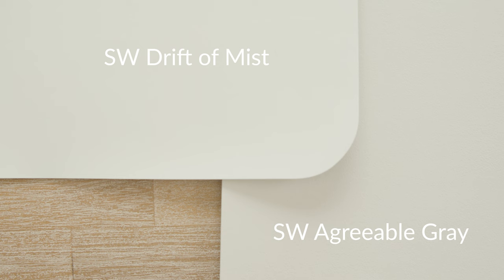There's another color I want to show you. Watch what happens when I compare this with Sherwin-Williams Agreeable Gray, which is considered a warm gray. For those of you that haven't been following me for a while, all warm grays have a green-gray undertone. Watch what happens when I compare this with Sherwin-Williams Drift of Mist. You're going to instantly see how Drift of Mist is warm in comparison to Agreeable Gray, but you're going to notice it's a little bit lighter. More importantly, notice that you don't see any green undertones in Drift of Mist. This is why Drift of Mist is considered a greige.